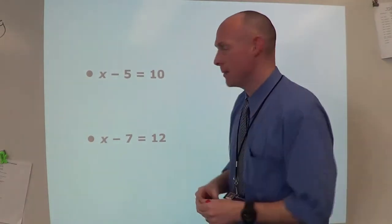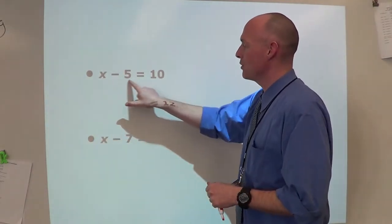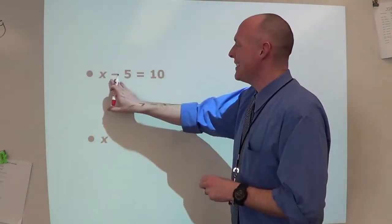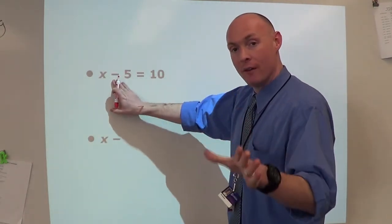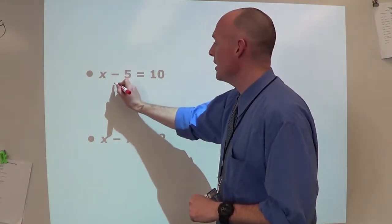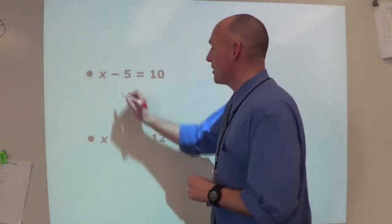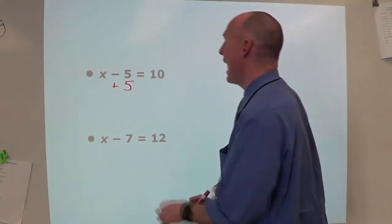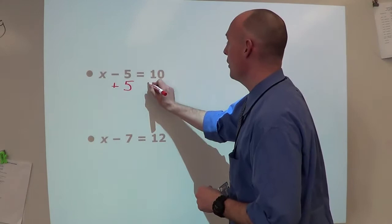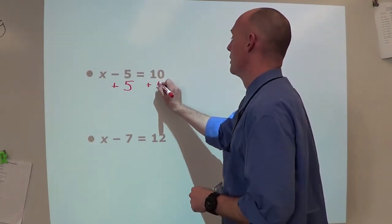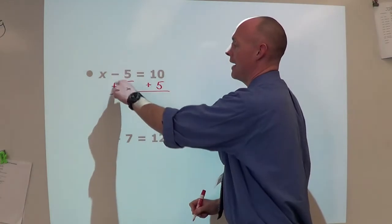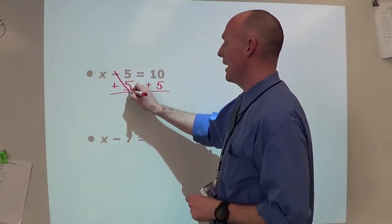Today we're going to use the inverse of subtraction. Here I have x minus 5 equals 10. What is the inverse of subtraction? It's addition. Just like with our balance, if I add 5 to one side, I've got to add 5 to the other side. Minus 5 plus 5 - those two cancel each other out.